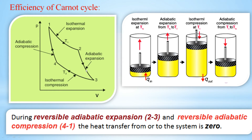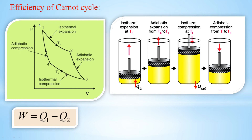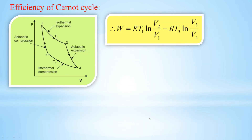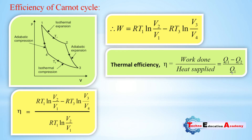For processes 2 to 3 and 4 to 1 (reversible adiabatic expansion and compression), heat transfer is zero in both. Therefore, work done W equals Q1 minus Q2. Substituting the values of Q1 and Q2, efficiency equals output divided by input, where output is work done (Q1 minus Q2) and input is heat supplied Q1. So efficiency equals (Q1 minus Q2) divided by Q1.